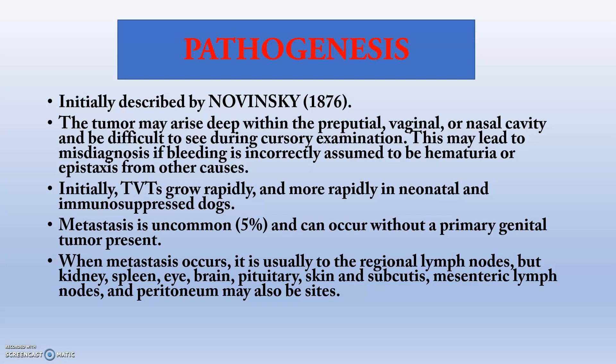When metastasis occurs, these cells will spread to the regional lymph nodes, kidney, spleen, eye, brain, pituitary, skin and subcutis, mesenteric lymph nodes, and peritoneum — these may also be sites of metastatic spread.